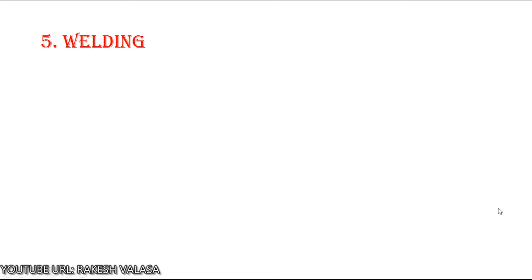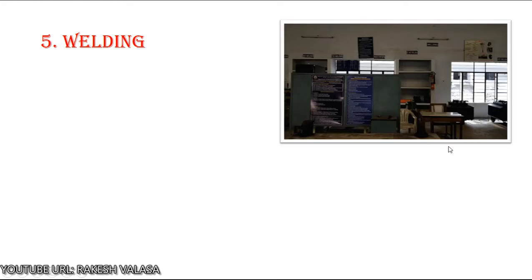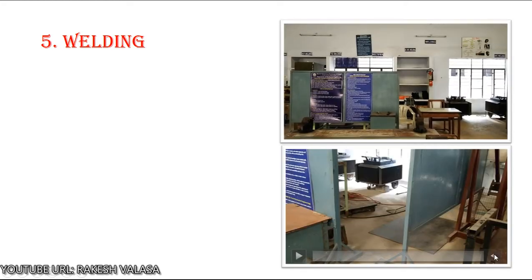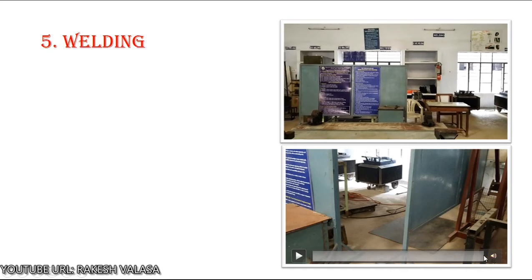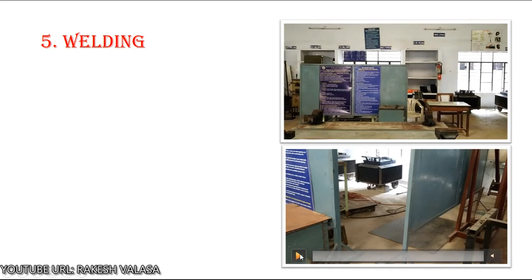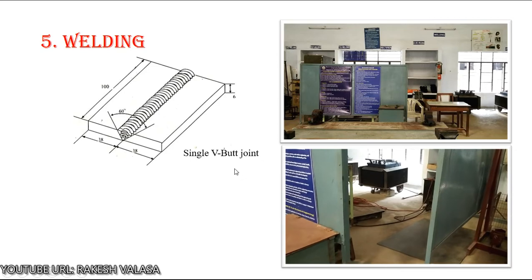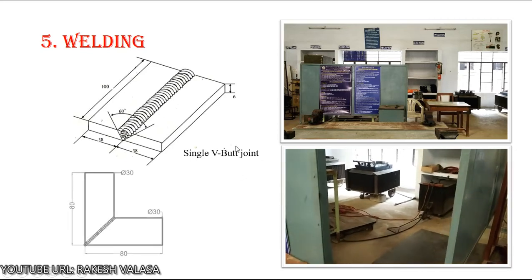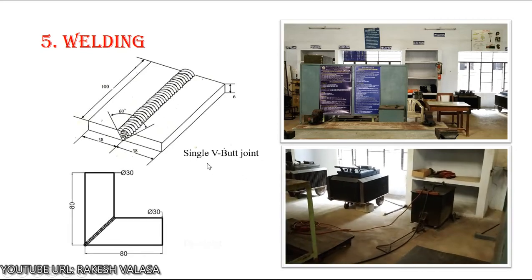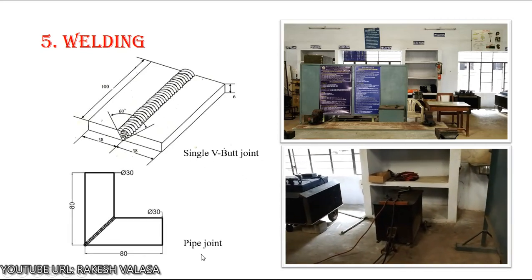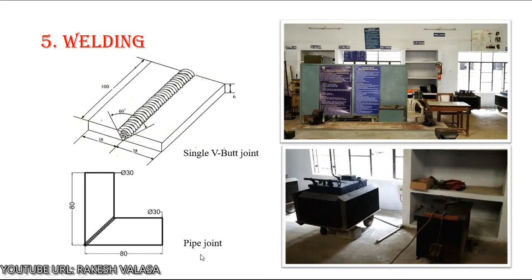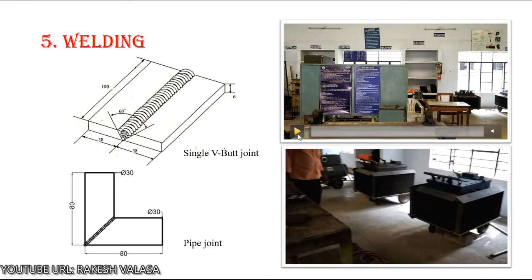Next, welding. Welding is the process of joining similar or dissimilar metals by the application of heat, with or without application of pressure or filler metal, in such a way that the joint is equivalent in composition and characteristics to the metals being joined.